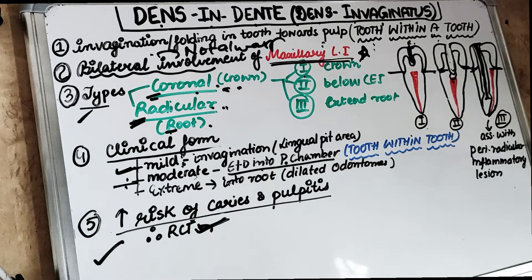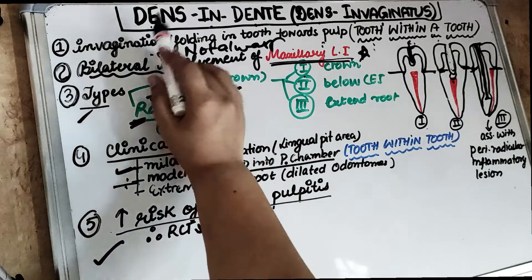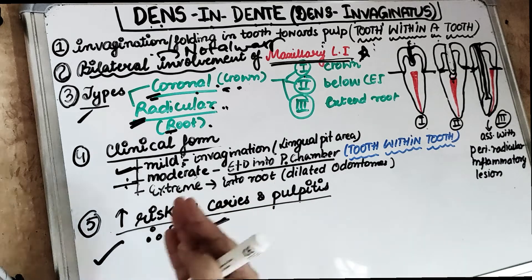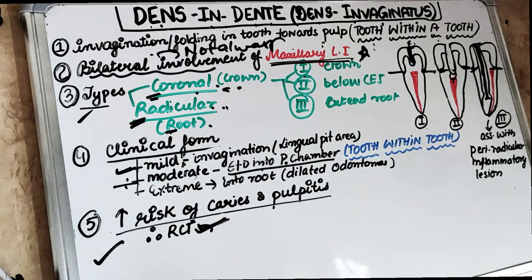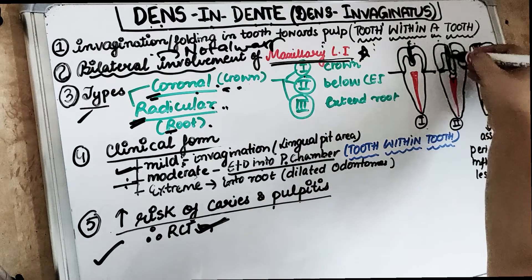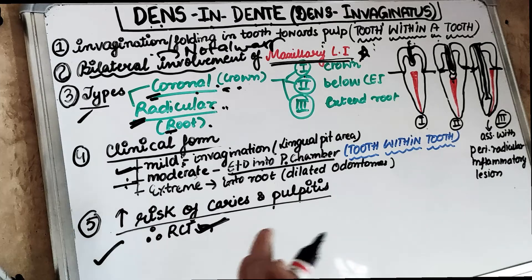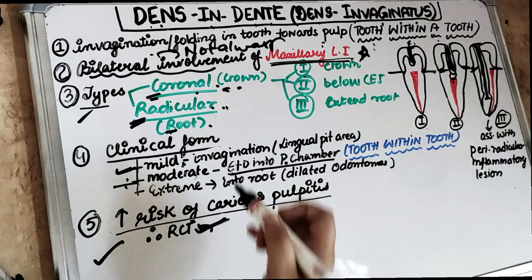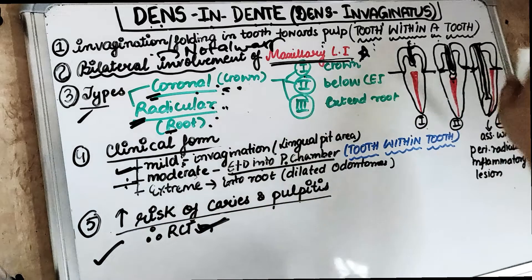Key points about Dens in Denti: a focal area of invagination on the surface of the tooth produces a tooth-within-the-tooth appearance. Trauma occurring before calcification leads to invagination of the tooth towards the pulp, which gives a radiographic tooth-within-the-tooth appearance when the pulp chamber is involved. There is increased caries susceptibility and increased risk of pulpitis. There are two main types — the coronal type, where invagination is limited to the crown, and the radicular type, where it involves the root.